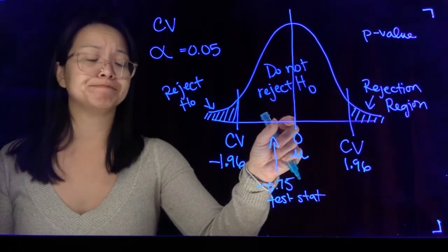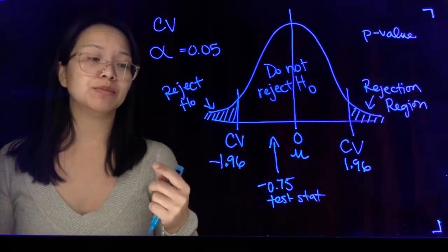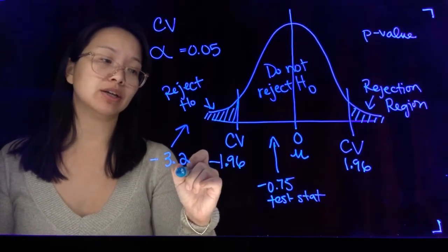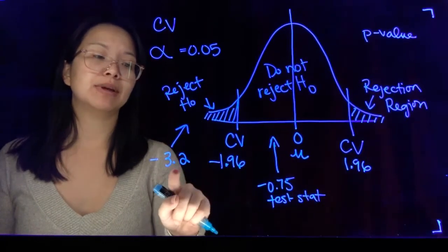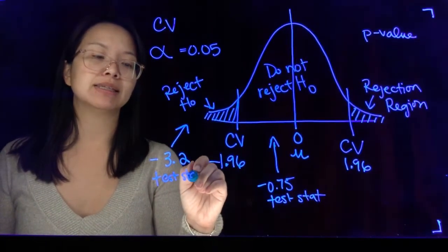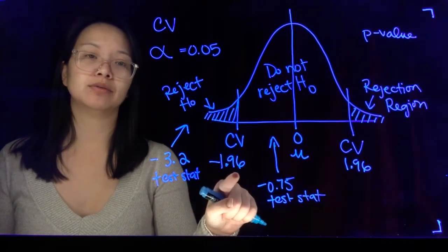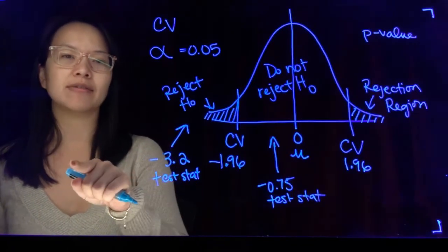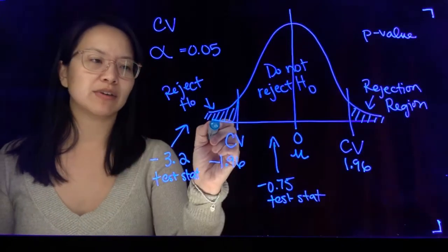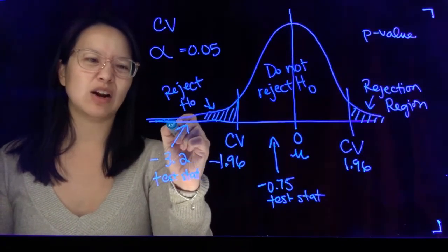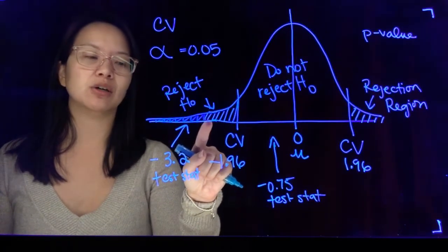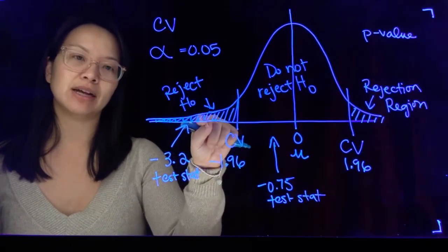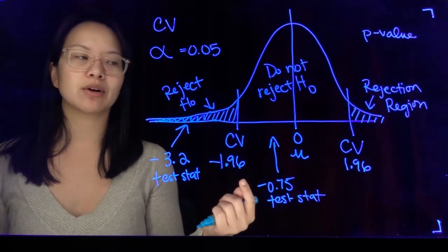If anything, the evidence supports the null so we would keep it — we keep the assumption about the world that we made. However, if our test statistic happened to be negative 3.2, we can imagine that would fall way out to the left, in the rejection region, because negative 3.2 is much smaller than the critical value. As numbers move further left — negative 3.2, negative 4, negative 5 — they're getting smaller, all the way into the rejection region. So yes, we would reject the null.